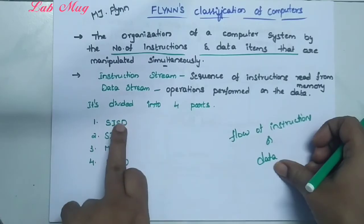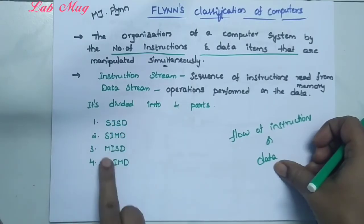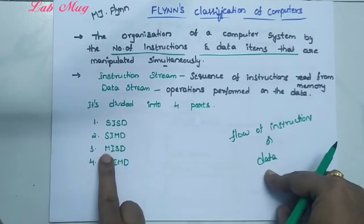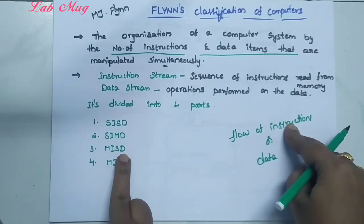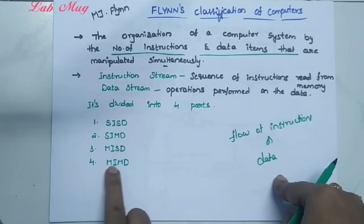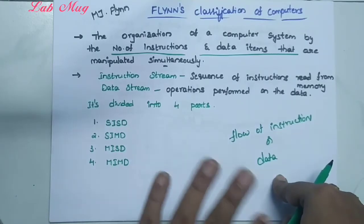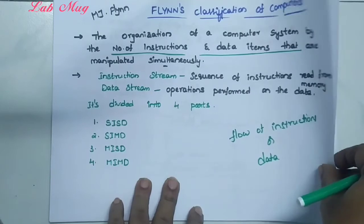Flynn divided into four categories. The four categories are: first, SISD — Single Instruction Single Data; second, SIMD — Single Instruction Multiple Data; third, MISD — Multiple Instruction Single Data; and fourth, MIMD — Multiple Instructions Multiple Data.